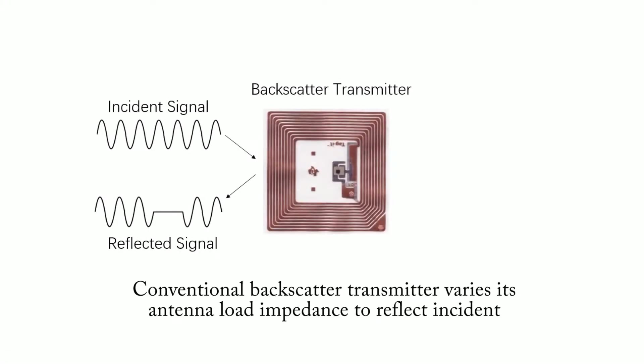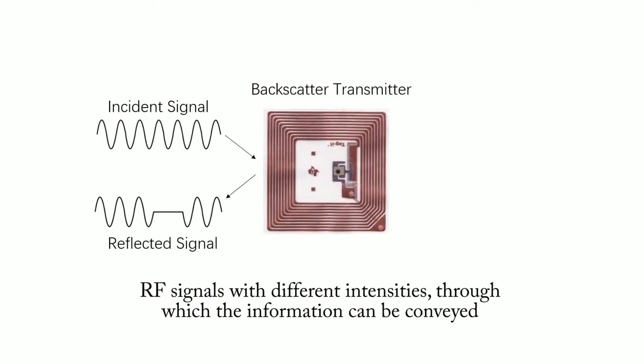Conventional backscatter transmitter varies its antenna load impedance to reflect incident RF signals with different intensities, through which the information can be conveyed.